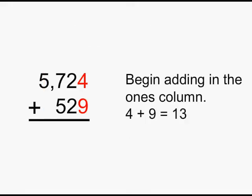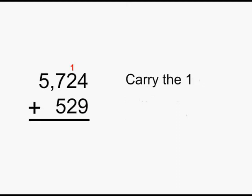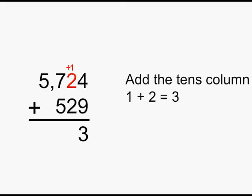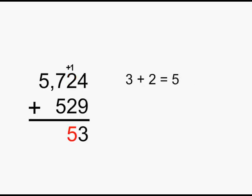We always begin on the right-hand side in the ones column when we begin adding. 4 plus 9 is 13. We'll carry the 1 and put down the 3. It's a good idea to add a plus sign next to the 1 to remind yourself you'll be adding it. 1 plus 2 is 3, plus 2 is 5.